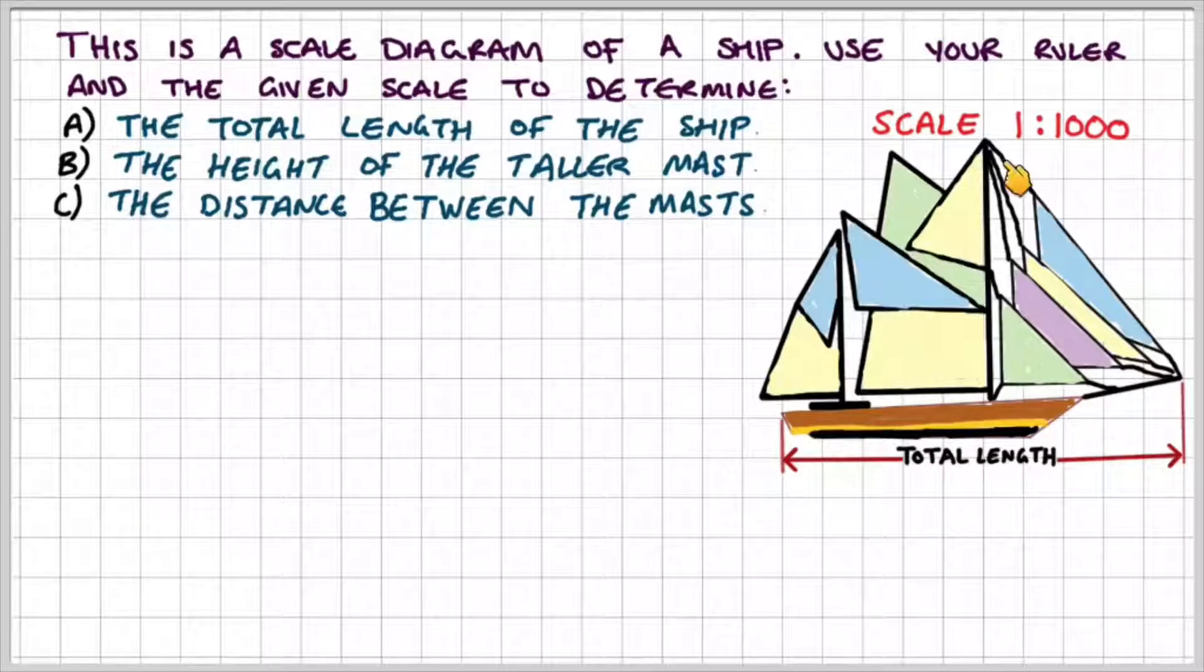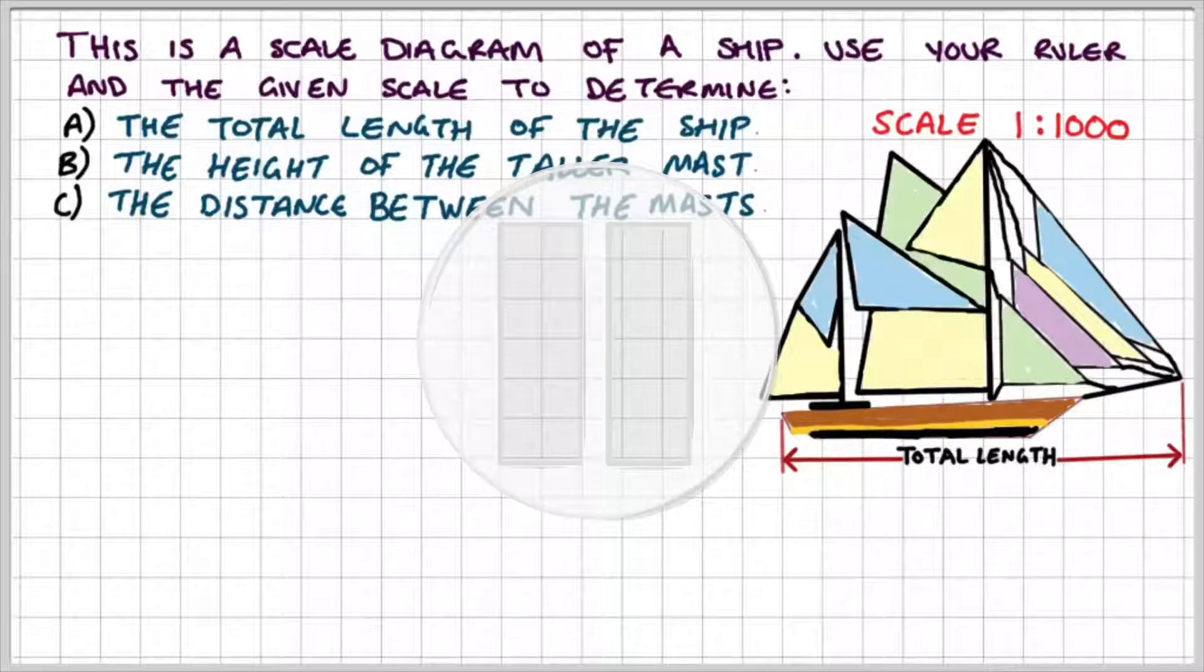And we're going to use a scale of 1 to 1000. Every one centimeter that you measure on the diagram is going to represent a thousand centimeters in real life. So I know it's a bit wacky but pause the video here and try to do this for yourself. Measure the total length of the ship, the height of the tallest mast and then part c the distance between the two masts.